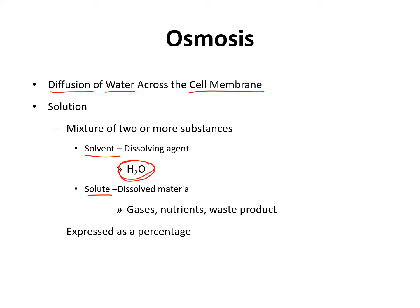For example, if you have a solution that is 5% sodium chloride — and sodium chloride is salt — then it must be 95% water. When you express something as a percentage, the total is 100%. So if you are given the percentage of the solute, you can figure out the percentage of the water by subtracting that number from 100.